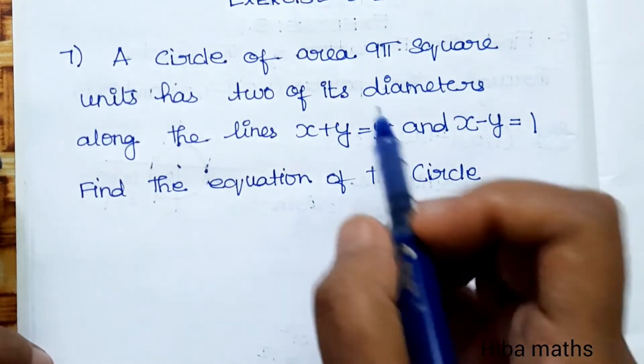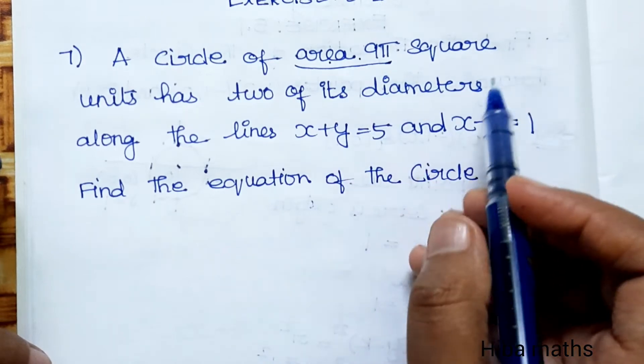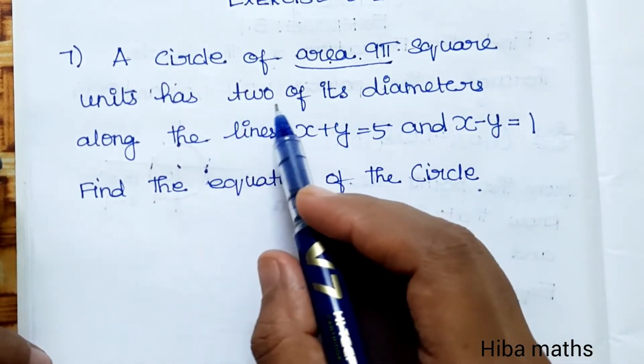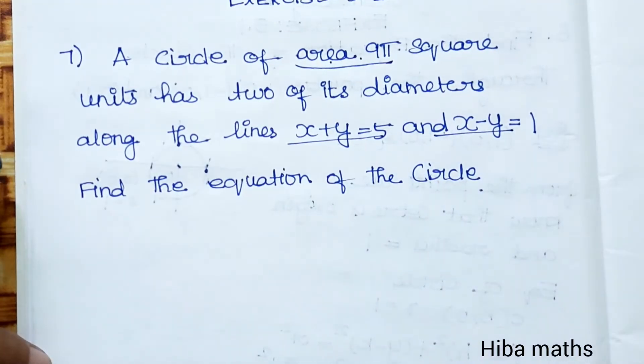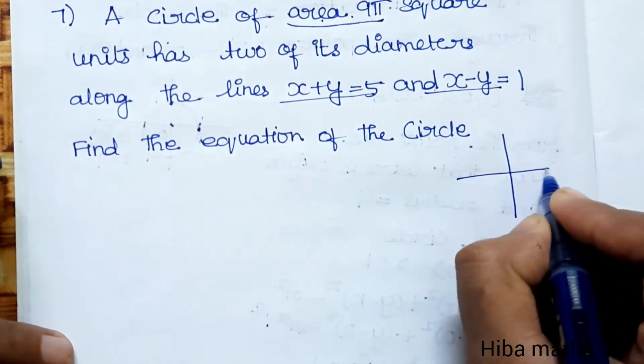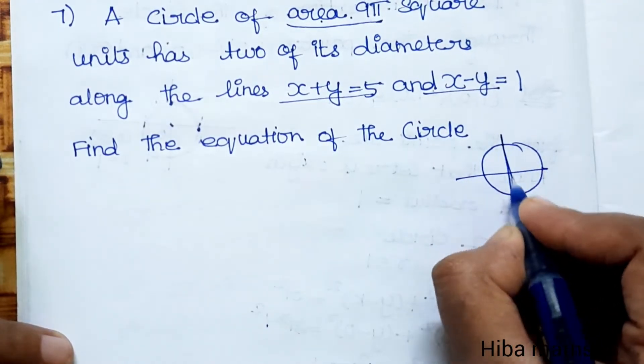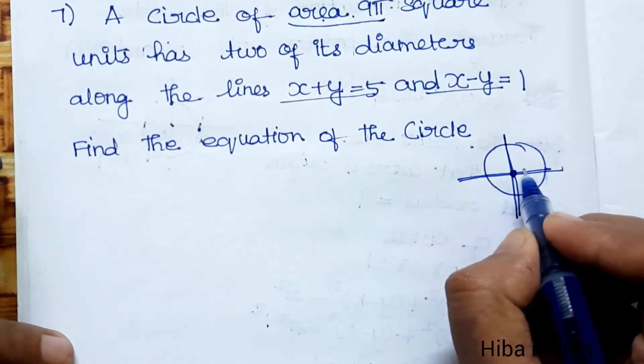The circle has two of its diameters along the given lines. These two diameters will intersect at the center of the circle. So we need to find where these two lines meet - that intersection point will be the center.